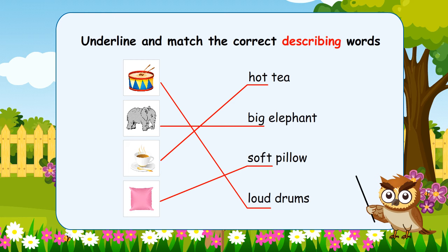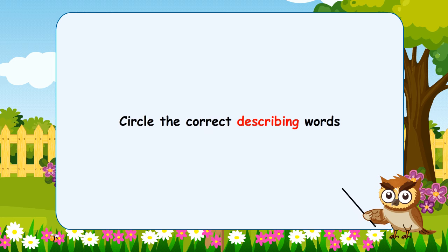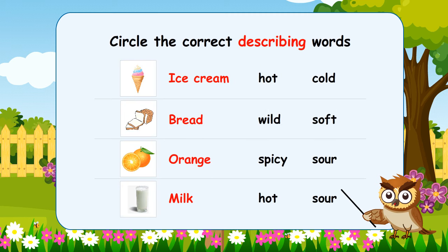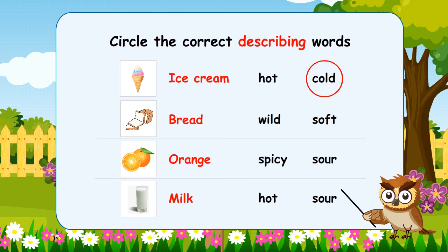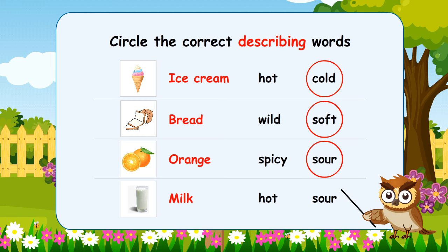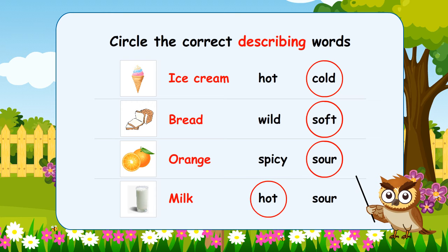Now we are going to do another exercise. Circle the correct describing words. Ice Cream — the describing word is 'Cold.' The next word is bread — bread will be soft. The next one is orange — what is the taste of orange? Sour. Very good. The last one is milk — milk is hot. Well done.